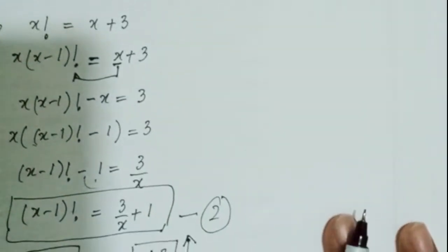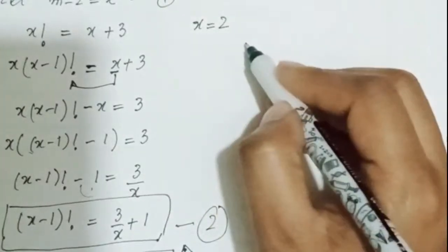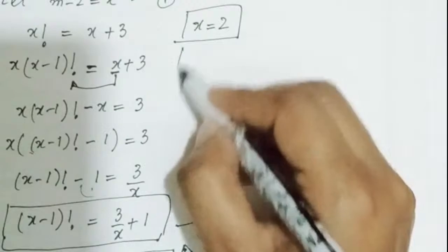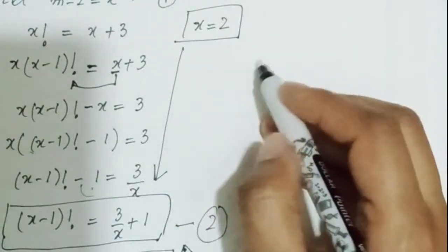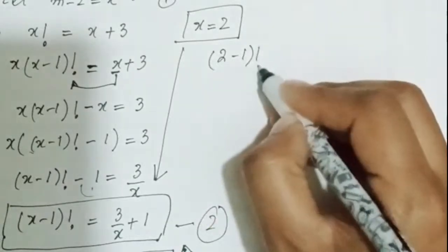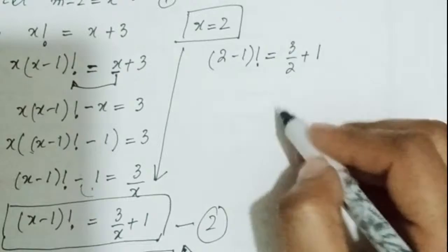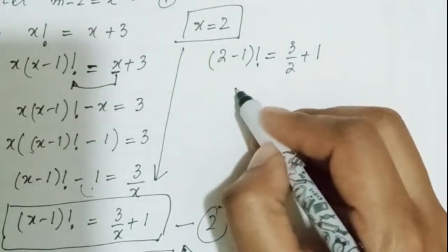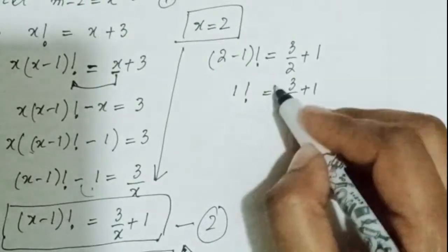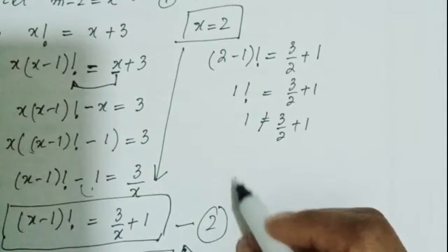Now try x equals 2. Substituting into equation 2: (2 minus 1) factorial equals 3 over 2 plus 1. That gives 1 factorial equals 3 over 2 plus 1, so 1 equals 3 over 2 plus 1. This is again not possible, so x equals 2 is not a solution.